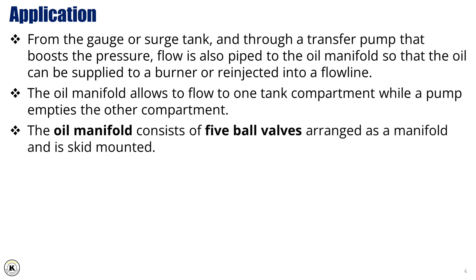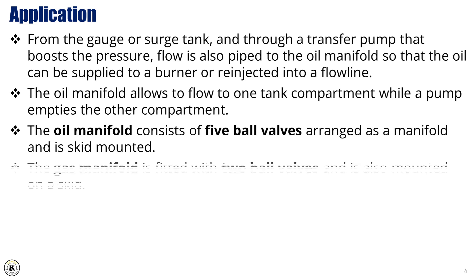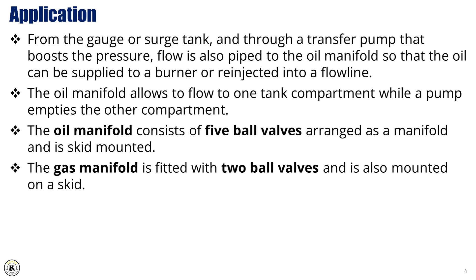The oil manifold consists of five ball valves, arranged as a manifold and skid mounted. The gas manifold is fitted with two ball valves, and is also mounted on a skid.